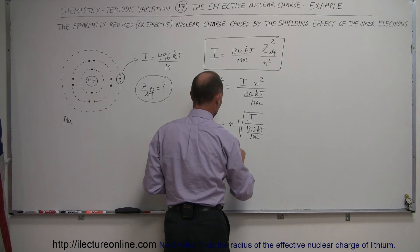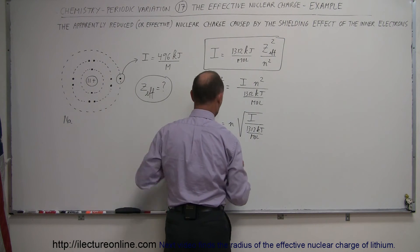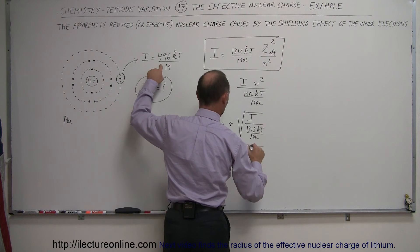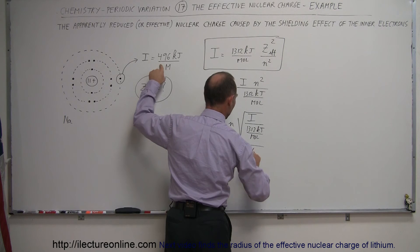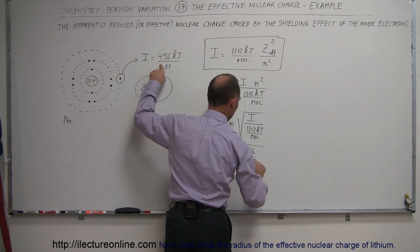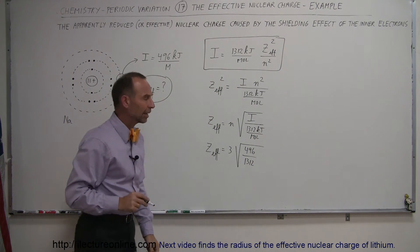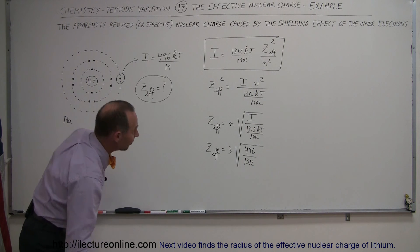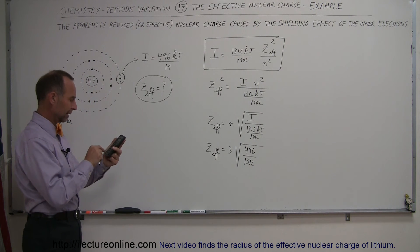N is going to be 3 because it's in the third energy level, times the square root of the ionization energy, which would be 496, and divide that by 1,312. Notice I eliminated kilojoules per mole because that cancels out. So all we have to do now is take a calculator and work that out.